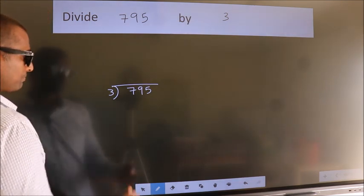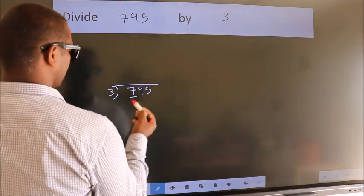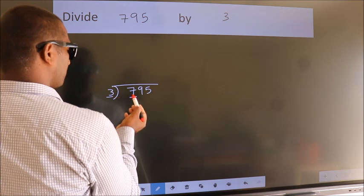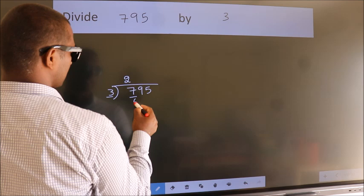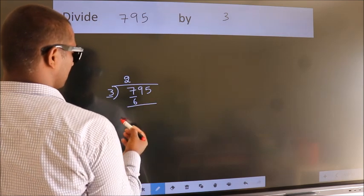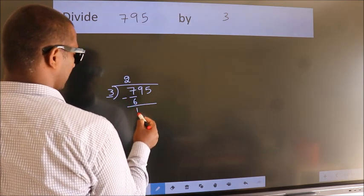Next. Here we have 7, here 3. A number close to 7 in 3 table is 3 times 2 is 6. Now, we should subtract. We get 1.